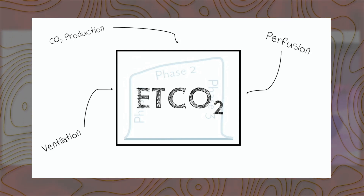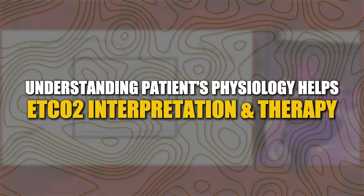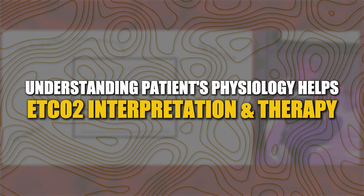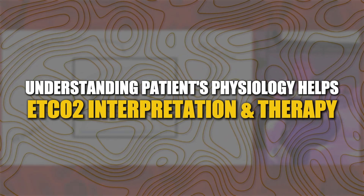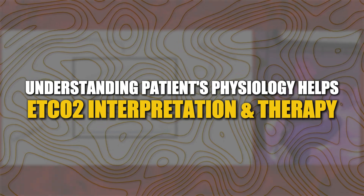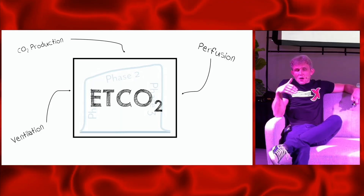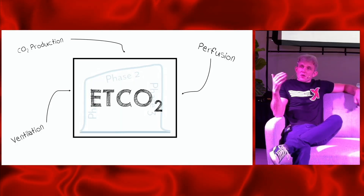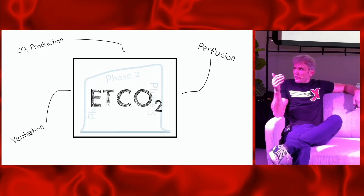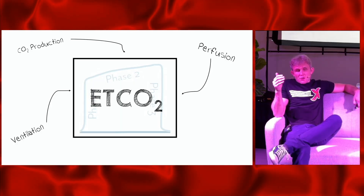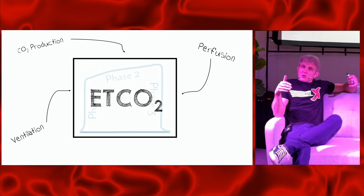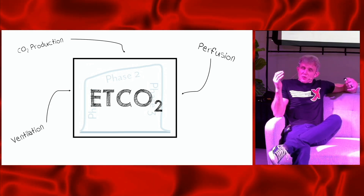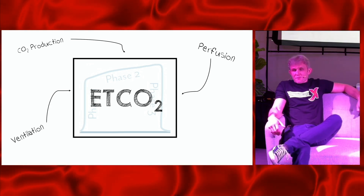In summary: there are three components of end-tidal — ventilation, CO2 production, and perfusion — all affecting end-tidal in ways that are hard to predict without understanding the patient's physiology. A deeper understanding of your patient's physiology gives you insight into what the end-tidal value in front of you means, and once you understand that physiology, you're able to use end-tidal in a therapeutic fashion.